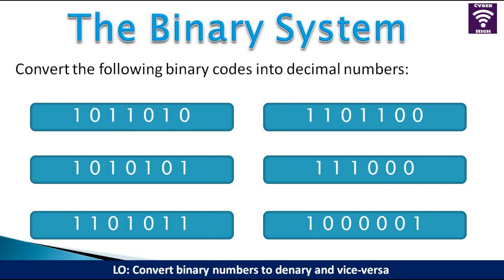It's time to reveal. Let's see what the first number represents. This represents 90. Remember, you simply place 2 to the power of 0 to the power of 1 and going all the way. When you find that, now you now have to add the corresponding values. We get 90. For the second part, it's 108, 85, 56, 107, and finally 65. Well done if you managed to get all this correct.